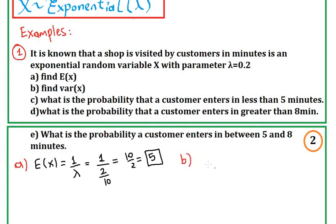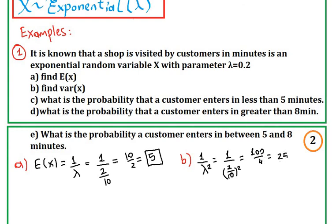Now let's find the variance. We derived in part 1 that variance is 1 over lambda squared. So it is 1 over (2/10) squared, which gives 100 over 4, which equals 25. So the variance of X is 25.